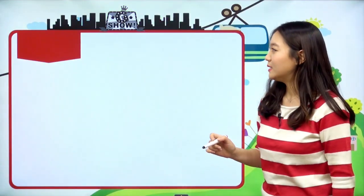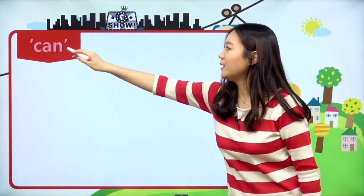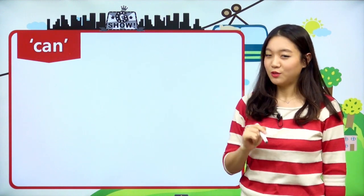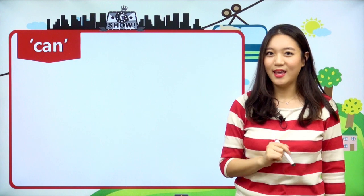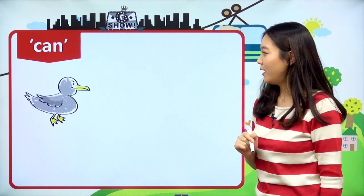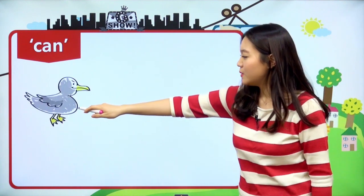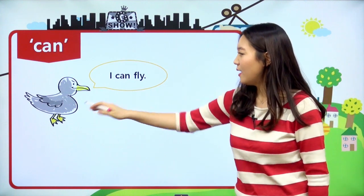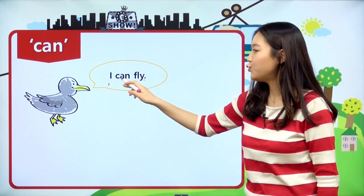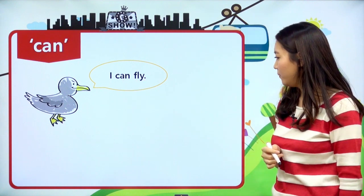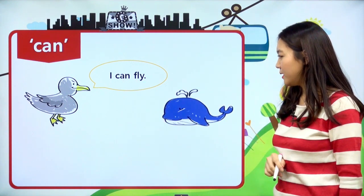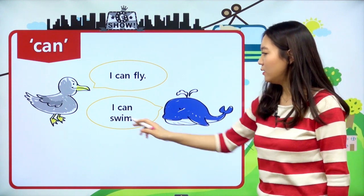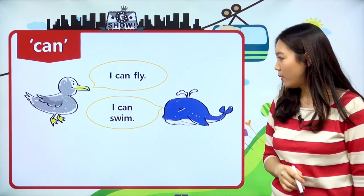오늘은 조동사 can에 대해서 공부를 해 볼 거예요. can에 대해서 들어본 친구도 있고 들어보지 않은 친구들도 있을 텐데 예문을 통해서 한번 살펴볼게요. This bird says, I can fly. 이 새가 'I can fly', 나는 날 수 있어라고 이야기를 하고 있네요. And this whale says, I can swim. 여기 있는 이 고래는 나는 수영할 수 있어라고 말을 하고 있어요.